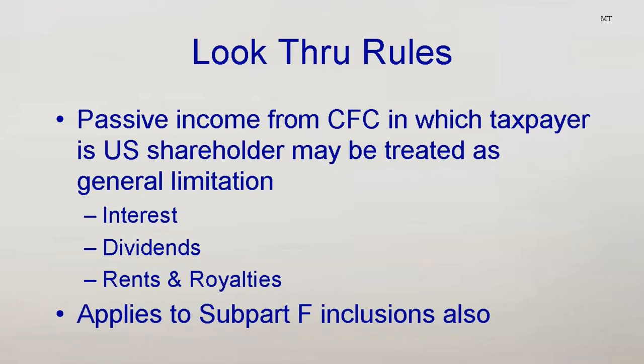Passive income received from foreign subsidiaries is looked through if certain ownership thresholds are met. The look-through provisions place a corporation that owns part or all of a foreign corporation in the same position as if it had earned the income itself. A student asks whether the shareholder picks up income as the subsidiary earns it, as in financial accounting. The instructor clarifies: no, regular tax rules still apply — a shareholder picks up income only when the subsidiary pays a dividend. The look-through rules convert passive income into general basket income. Subpart F, to be discussed later, does cause a shareholder to pick up income earlier.